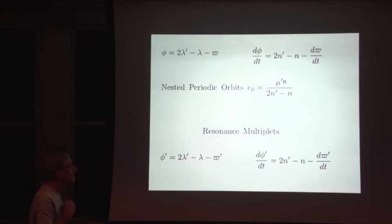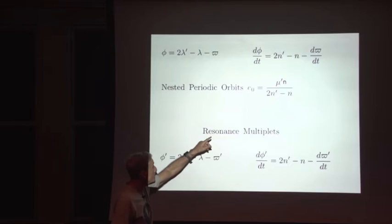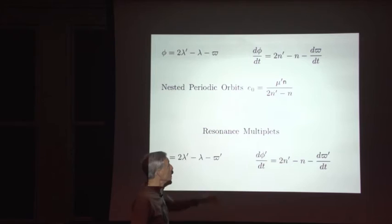Now there's another resonant argument, phi prime, which involves the periapsis longitude of Dione. But it's not important in this subject because Saturn is sufficiently oblate that the precession rate of this periapsis and the precession rate of Enceladus periapsis differ by so much that the two resonances don't overlap with each other. And then the rate of change of this resonant argument, if there were no resonance involved, it would be just given by twice the mean motion of Dione minus that of Enceladus, minus the precession rate due to the oblateness of Saturn and the other satellites.